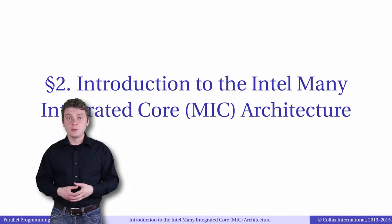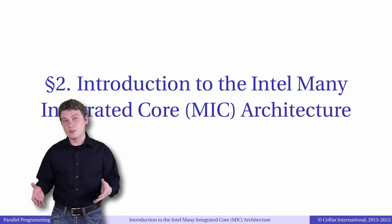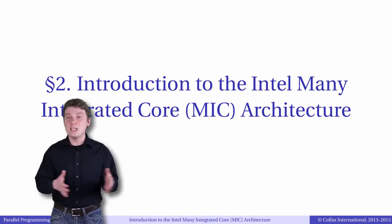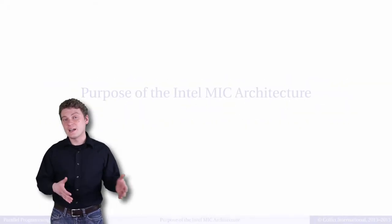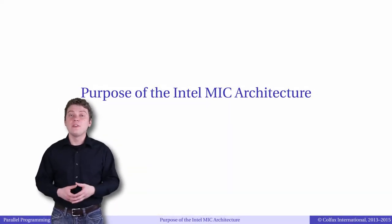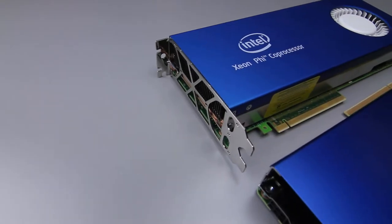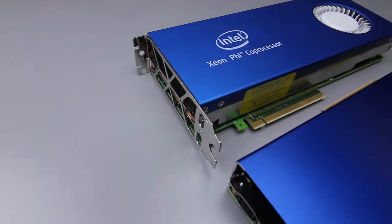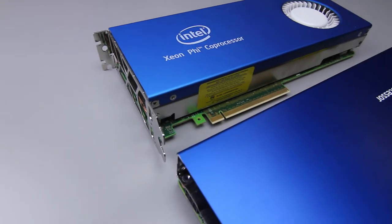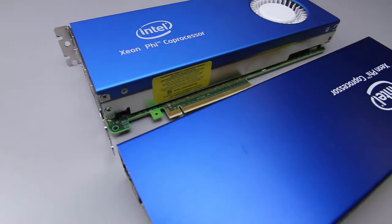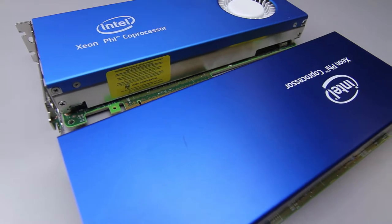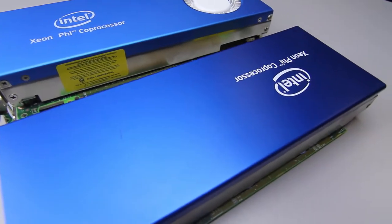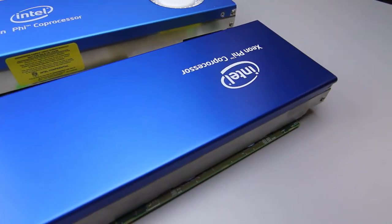In this video, episode 2.1, I will introduce Intel Xeon Phi Co-Processors based on the Intel MIC architecture and will cover some of the specifics of hardware implementation. Intel MIC architecture is a highly parallel, energy-efficient processor architecture that achieves high performance through utilization of a large number of cores, wide vector registers, and high-bandwidth on-package memory.